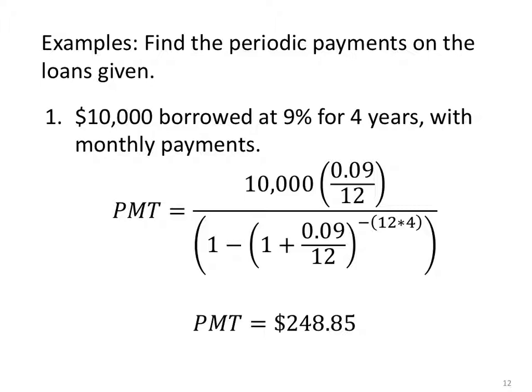Let's find the periodic payments on the loans given. Suppose I want to borrow $10,000 at 9% for four years. This is maybe a used car. You have really poor credit rating, but you want to get it paid off in four years. Let's see how much you would have to pay each month. $10,000 is the PV amount borrowed, multiplied by i.